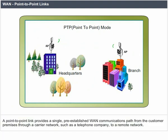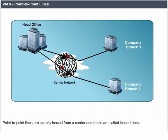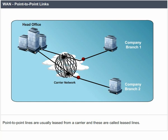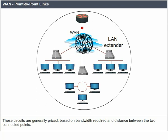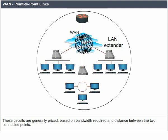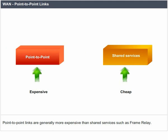WANs have a point-to-point link that provides a single pre-established WAN communications path from the customer premises through a carrier network (such as a telephone company) to a remote network. Point-to-point lines are usually leased from a carrier and are called leased lines. The carrier allocates pairs of wire and hardware to the user's line only. These circuits are generally priced based on bandwidth required and distance between the two connected points. Point-to-point links are generally more expensive than shared services such as Frame Relay.